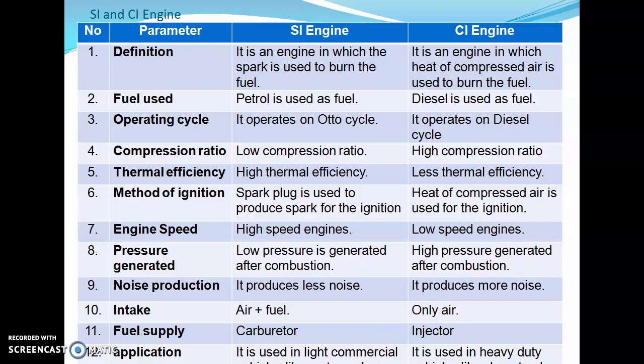Let us see the difference between SI engine and CI engine — spark ignition and compression ignition. In an SI engine, a spark is used to burn the fuel; in a CI engine, the heat of compressed air is used to burn the fuel. Fuel used: SI engine uses petrol or gasoline; CI engine uses diesel. Operating cycle: SI engine is based on the Otto cycle; CI engine is based on the diesel cycle. Compression ratio: SI engine has a low compression ratio; CI engine has a high compression ratio because ignition takes place by compressing the air. Thermal efficiency: SI engine has higher thermal efficiency; CI engine has less thermal efficiency.